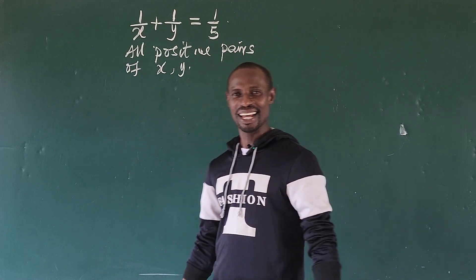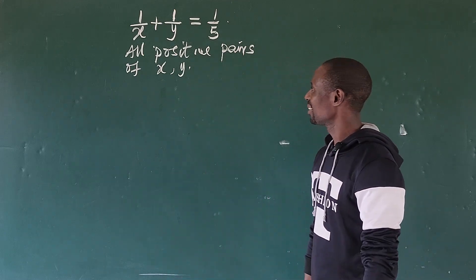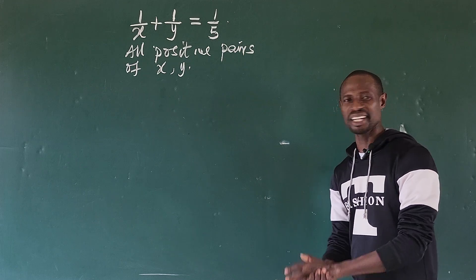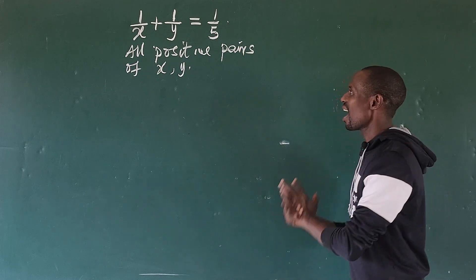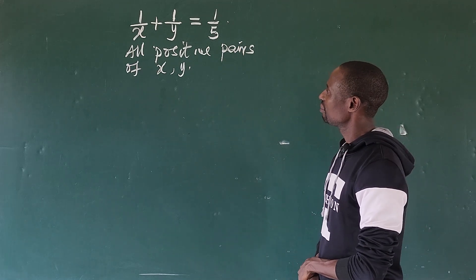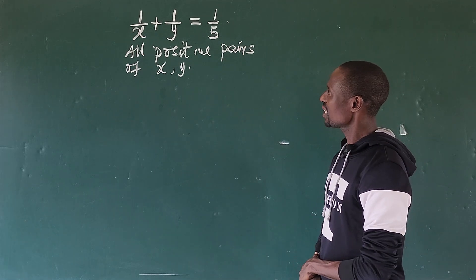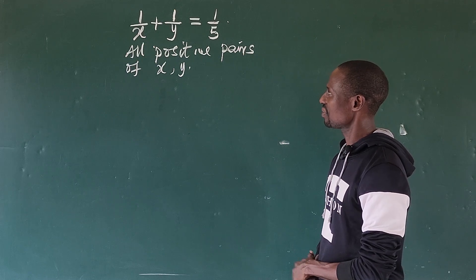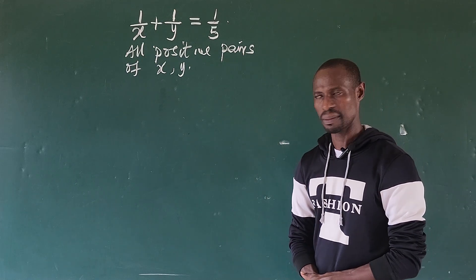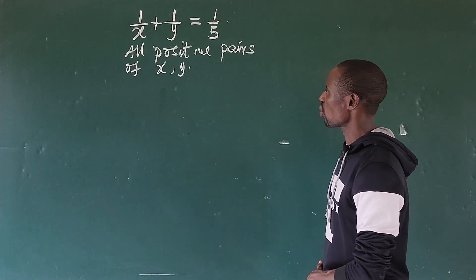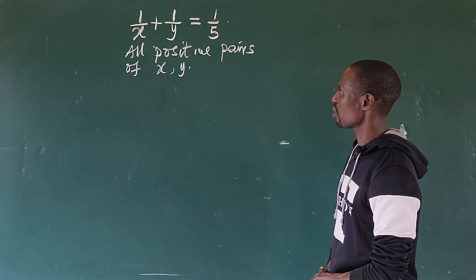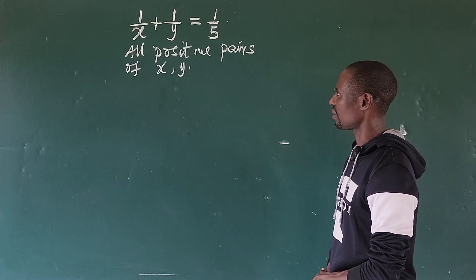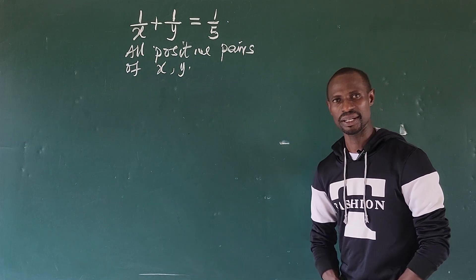Hi, welcome to today's class. Today we have a very nice math-only test challenge. How do we get some positive pairs of x and y that will satisfy these math problems? The question is: one over x plus one over y equals one over five. So what are the positive pairs here?